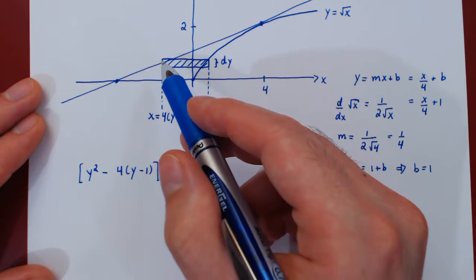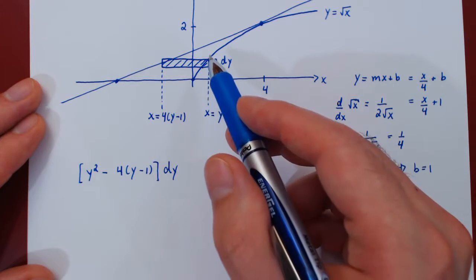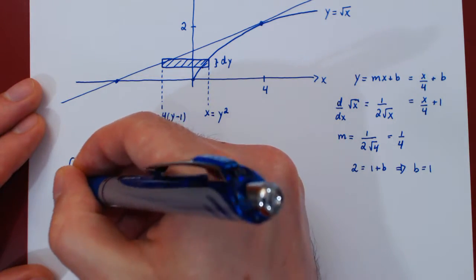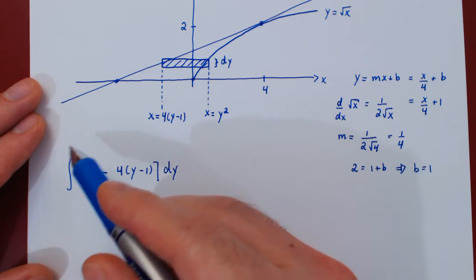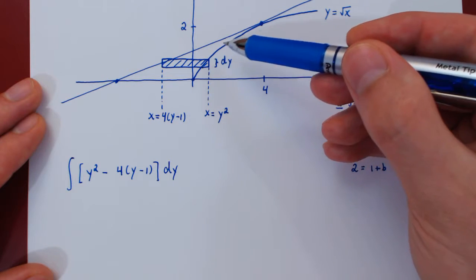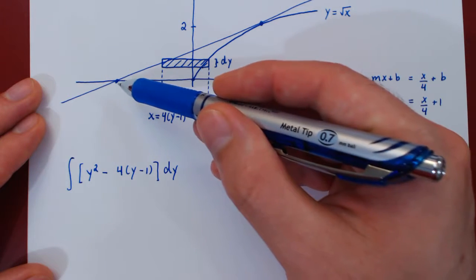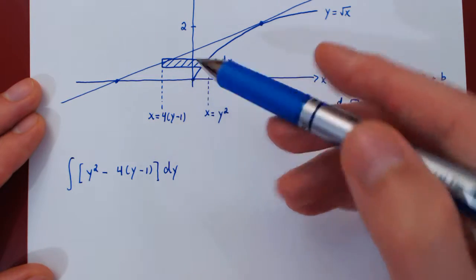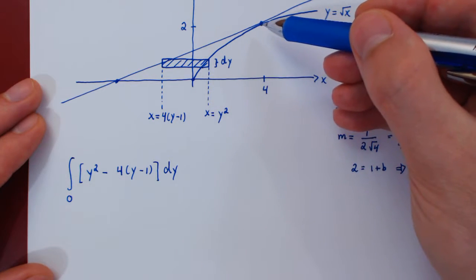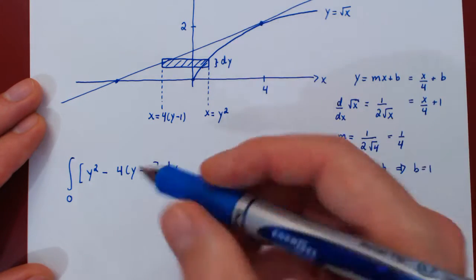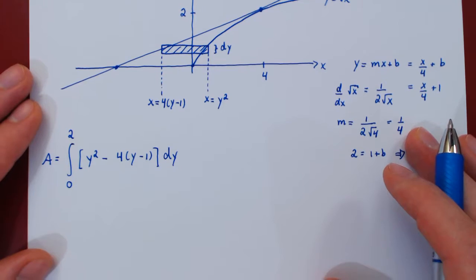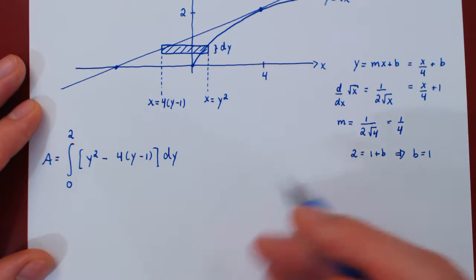This is the area of an infinitesimal rectangle. To obtain the total area we sum these rectangles. We integrate with respect to y, so we look at the span of the region along the y-axis. The region starts at y equals 0 and goes up to y equals 2, yielding the total area of the region, which we evaluate using the fundamental theorem of calculus.